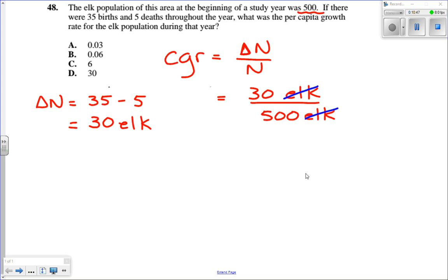Elk over elk will cancel, leaving us with just 30 divided by 500. Both numbers are positive, so our answer will be positive. We get an answer of 0.06. A unitless number because elk over elk cancels. And that leads us to select answer B, 0.06. Note that answer C is 6, while if you had converted to a percent, it could be 6%, but it doesn't say percent. So that's why we go with 0.06.